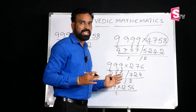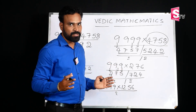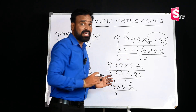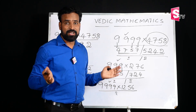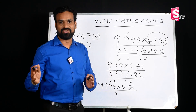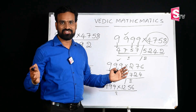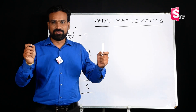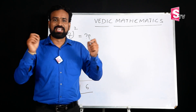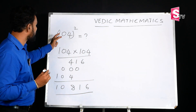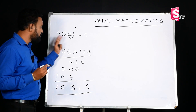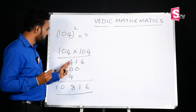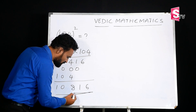This method only applies to numbers made entirely of 9s. There are various other digits covered in the course, where we have more methods. Now let's do squares. For example, 104 whole square. In the school method, you would do 104 into 104 — a full multiplication to find the answer. But in Vedic Mathematics, we can solve it in just 2 to 3 seconds.